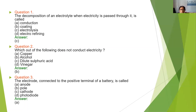Which of the following does not conduct electricity — copper, alcohol, dilute sulfuric acid, or vinegar? Copper conducts electricity. Dilute sulfuric acid, being an acid, also conducts electricity. Vinegar is acetic acid and also conducts electricity. Alcohol does not conduct electricity. So the answer is alcohol.